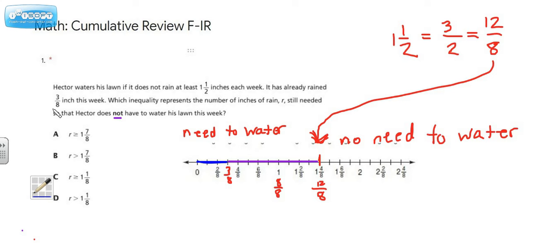Now let's think about what this means. It has already rained three-eighths of an inch this week. So that would be the amount that I have highlighted here in blue. If it's rained that amount, that means we need this much more to get to the twelve-eighths.